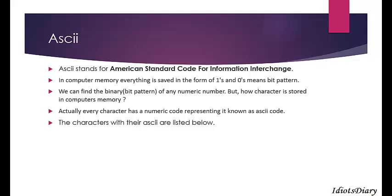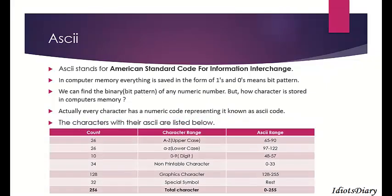The characters with their ASCII values: the 26 capital letters A to Z have ASCII values 65 to 90; the 26 lowercase letters a to z have ASCII values 97 to 122; the 10 digit characters 0 to 9 have ASCII values 48 to 57; 34 non-printable characters have ASCII values 0 to 33; 128 graphical characters have ASCII values 128 to 255; and 32 special symbols are also included. In total, there are 256 characters in ASCII, ranging from 0 to 255.